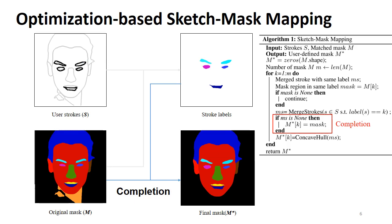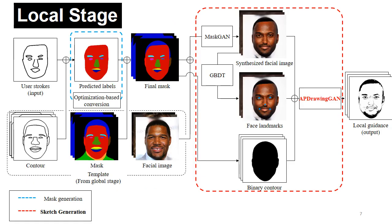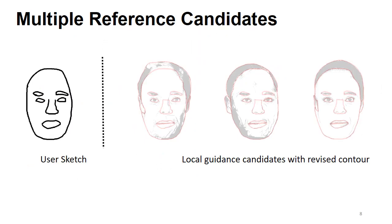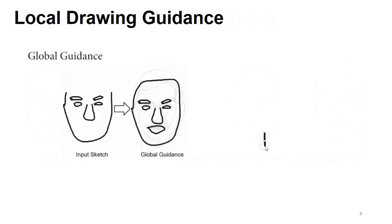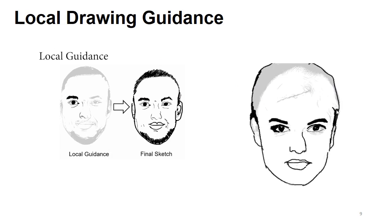If there is no stroke labeled as ID K, this means the user may not have drawn that component of the face. So we copy that facial part from the original mask to make the final mask complete. Finally, we convert the new face images from the mask into a portrait sketch using the APDrawing network for artistic rendering as our local guidance. Multiple local guidance candidates are provided at this stage, all matched with the contour according to the user's sketch, so users can select the most suitable one as local guidance for their final sketch.